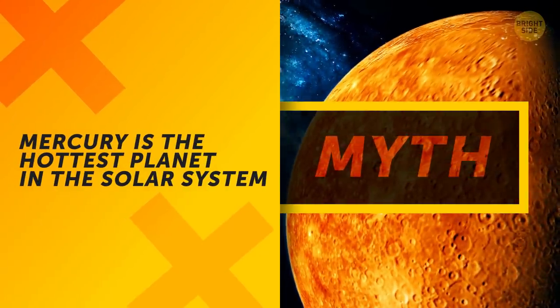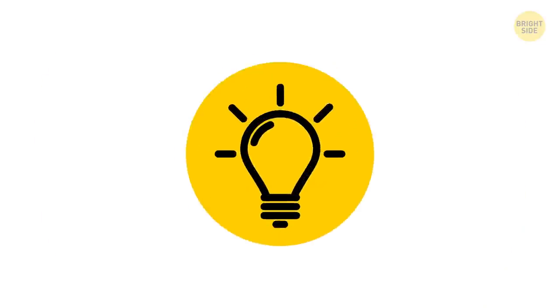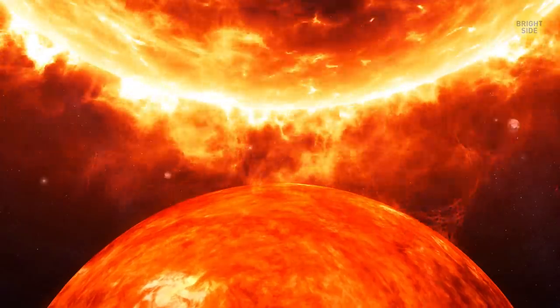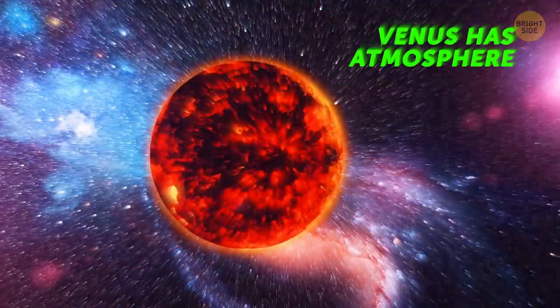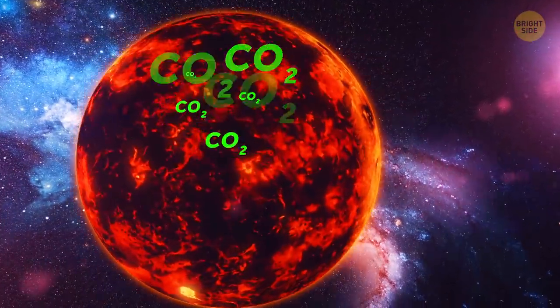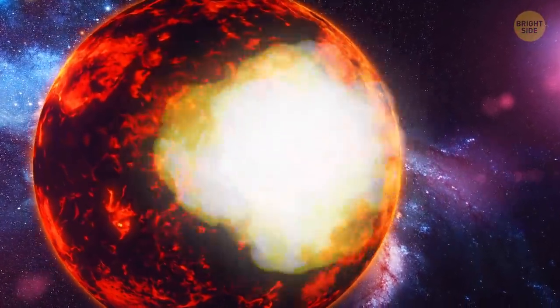Mercury is the hottest planet in the Solar System. Mercury is closest to the Sun, but Venus is much hotter. Mercury has no atmosphere, while Venus has one. It mostly consists of CO2 that traps heat insides and adds to the high temperature.